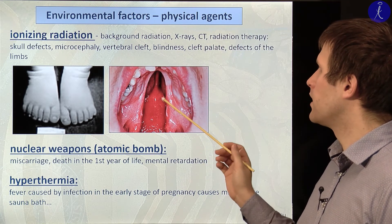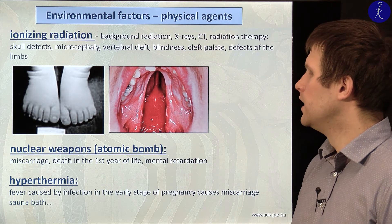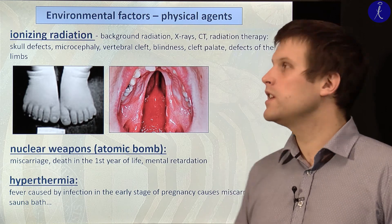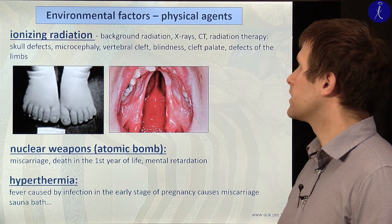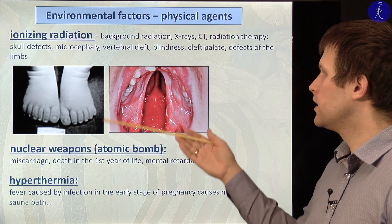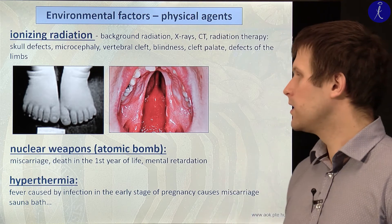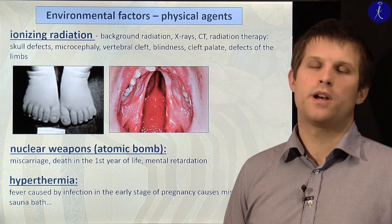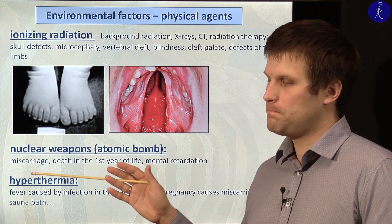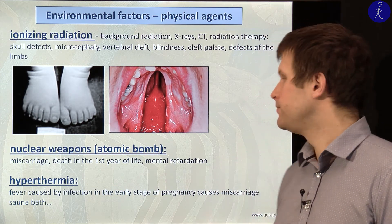These effects can also be seen as results of nuclear weapons — as in Hiroshima or Chernobyl — usually resulting in miscarriage, and many children dying within the first year. Hyperthermia is also an important environmental factor — if the mother has prolonged high fever, it can result in problems and miscarriage. Sauna baths can also induce it.